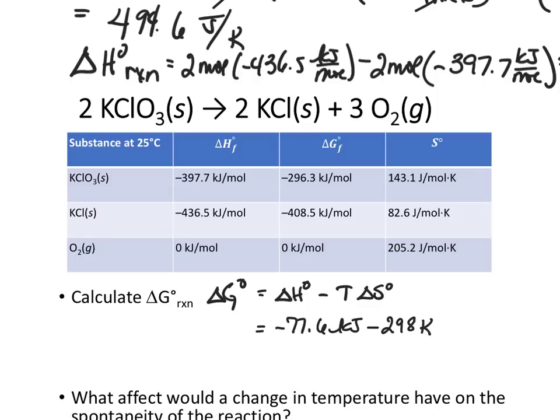times the delta S, which we just calculated, of 494.6. But watch your units. This is in joules per Kelvin. Now we can't subtract this until it's also in kilojoules. So we will convert onto kilojoules. A thousand joules is a kilojoule. And that will give me a delta G of a negative 225. And we'll have units of kilojoules. So that would be the delta G.